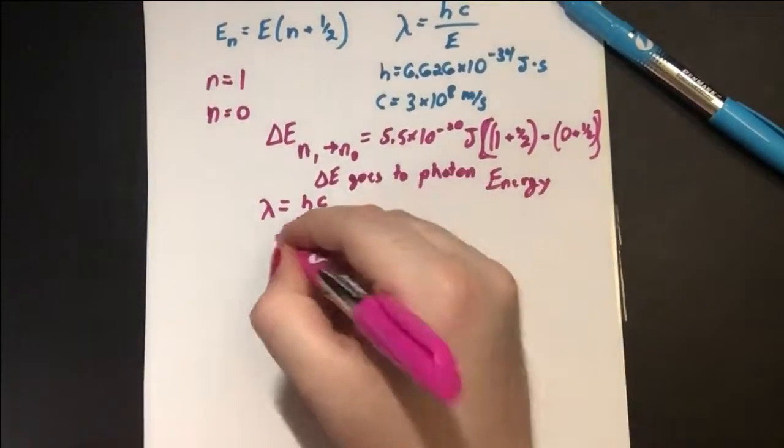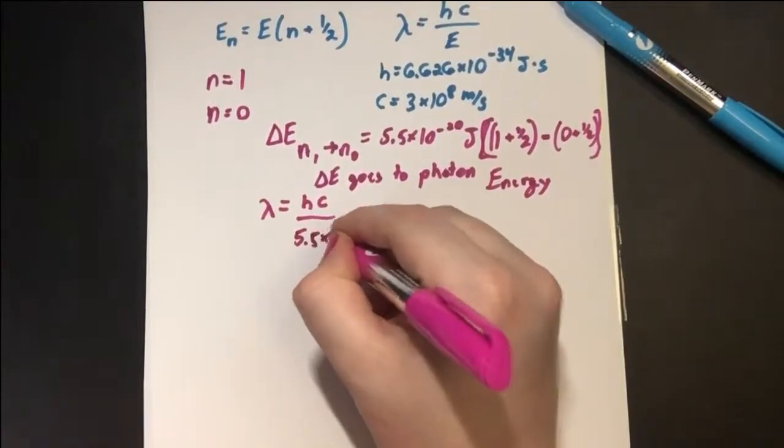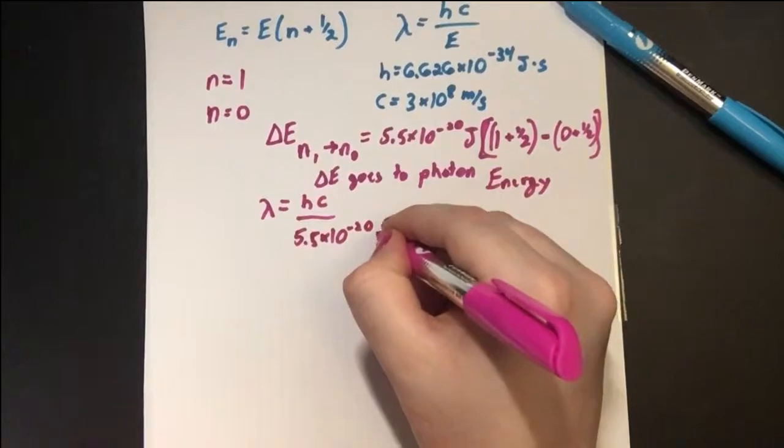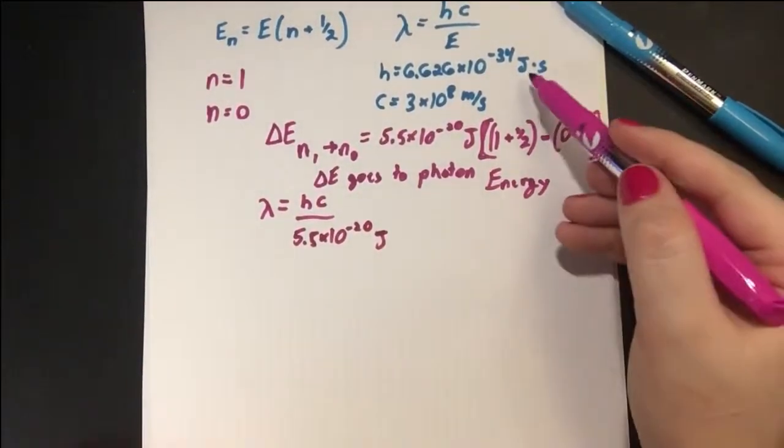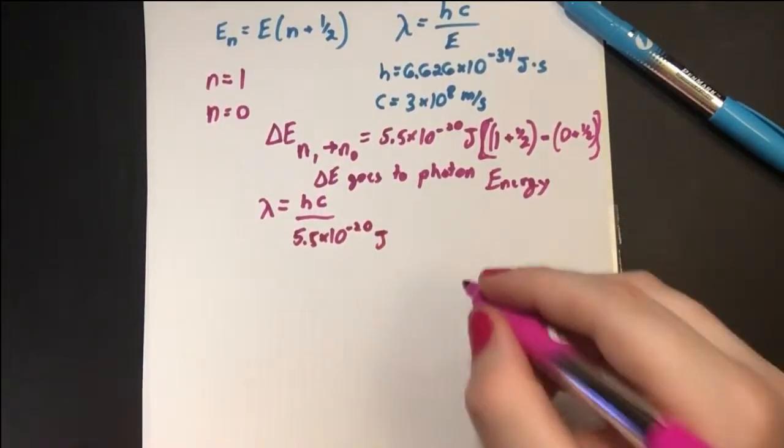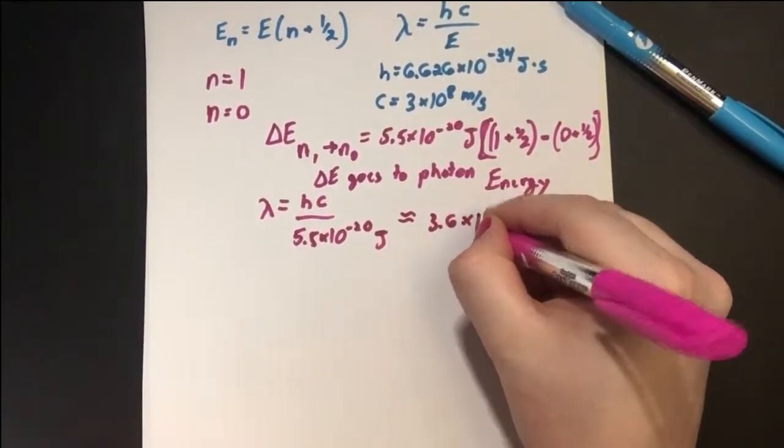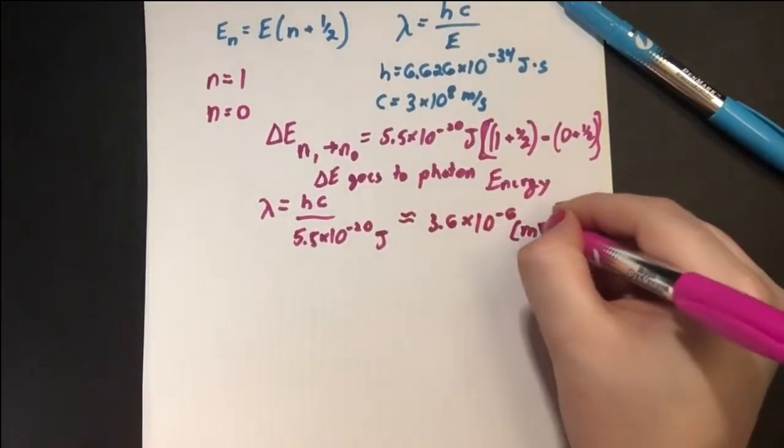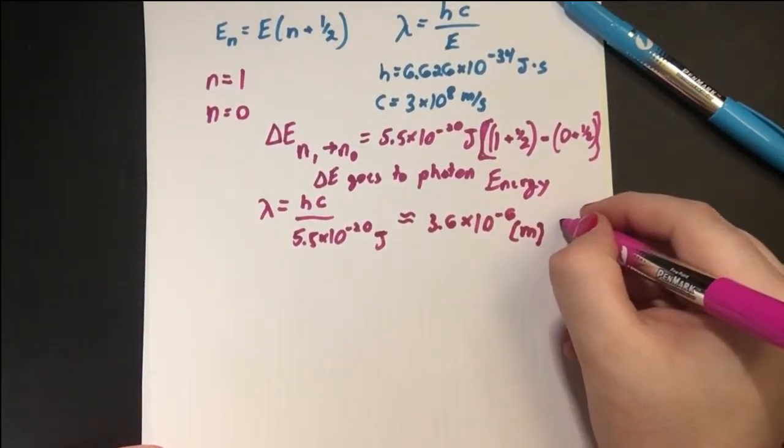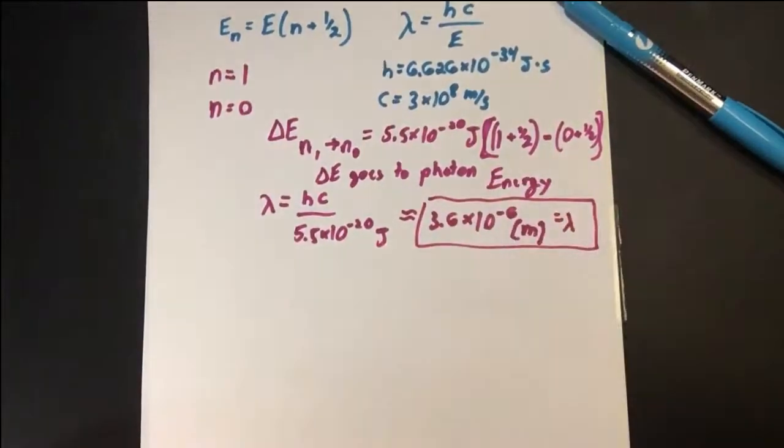So we want to divide this by the energy E of the photon, which is 5.5 × 10⁻²⁰ joules. So plugging in these two values and dividing by our energy answer, we get approximately 3.6 × 10⁻⁶ meters.